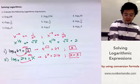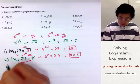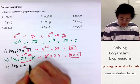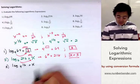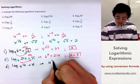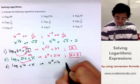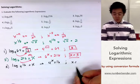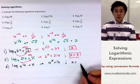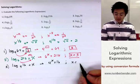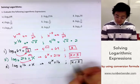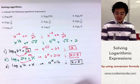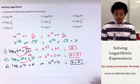We can also answer problem number 3 using logarithm of 16, base 4, equated to x. Converting gives us 4 raised to x equal to 16. This is easier to solve because we know that 4 raised to 2 equals 16. So x equals 2. That's how we solve problems involving logarithms.